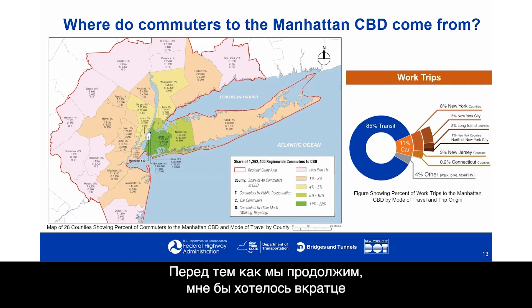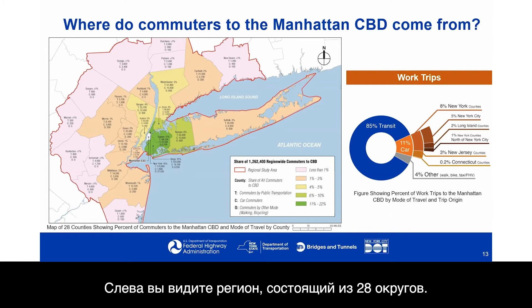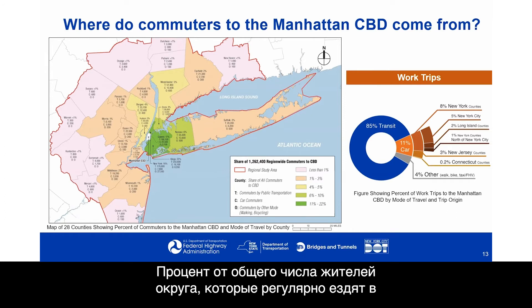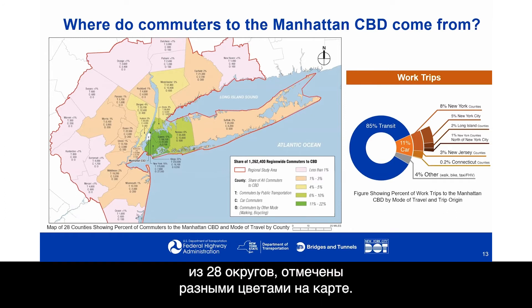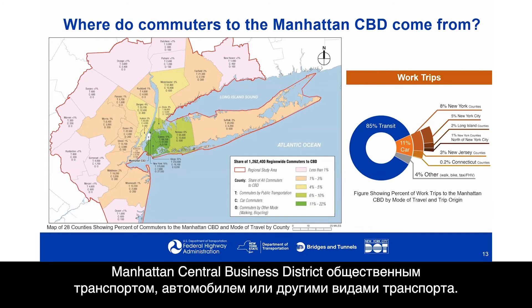To give a sense of where commuters are actually coming from into the Manhattan CBD: the map on the left shows the 28-county region. The colors denote the proportion of total commuters to the Manhattan CBD from each county. The map also shows how many commute by transit, car, or some other transportation mode to reach the Manhattan Central Business District.